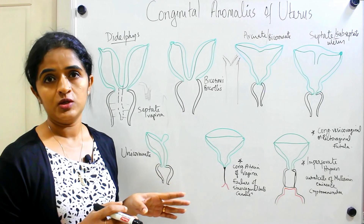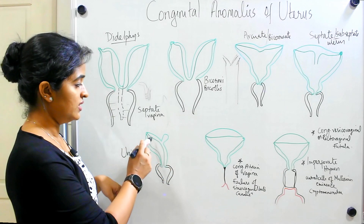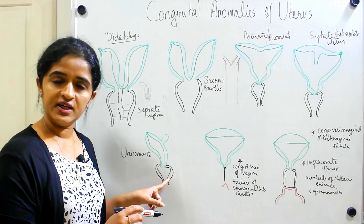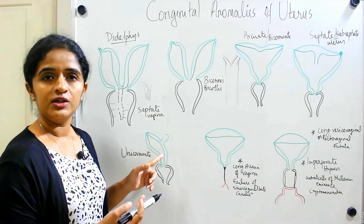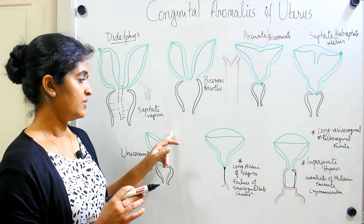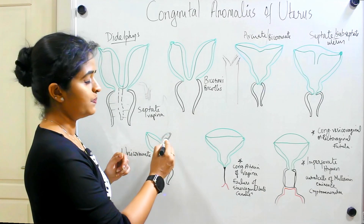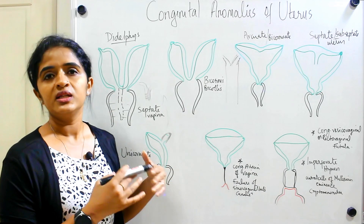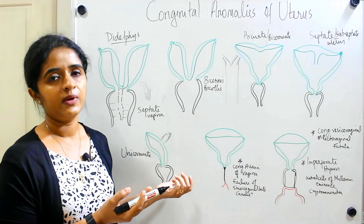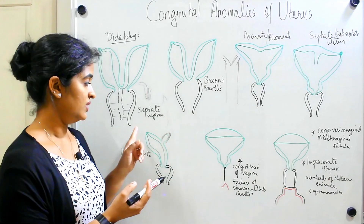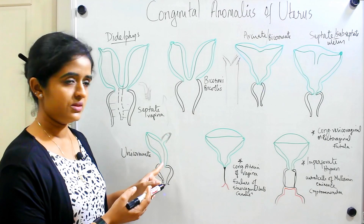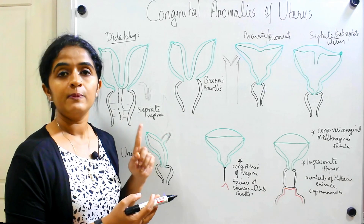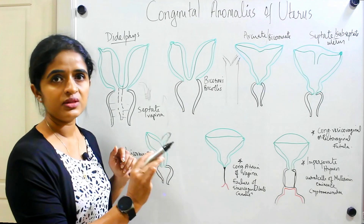This condition is known as unicornuate uterus. As you can see, there is only one horn and the other is rudimentary — meaning only one paramesonephric duct develops into the uterus, cervical canal, and vagina, whereas the other remains as a rudimentary structure fused with the main developing duct. On one side there will be no uterine tube. The entire uterine cavity, cervix, vagina, and one uterine tube all develop from a single paramesonephric duct.